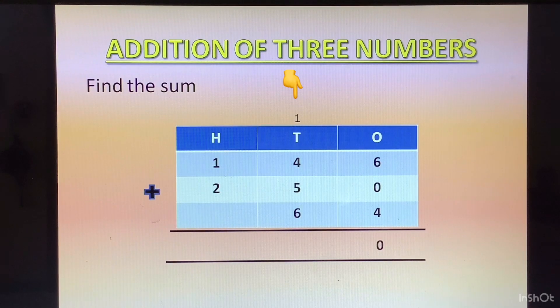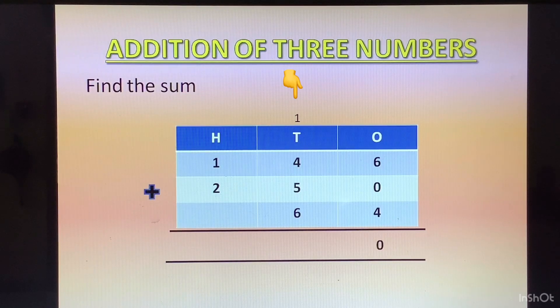Now in the 10's column we have the numbers as 4 plus 5 plus 6 and plus 1 of the carry. We are going to group and add in any order so that the calculation becomes easy. We can start with 1 plus 4 which is 5, then 5 plus 5 which is 10, and 10 plus 6, 16. 1 will go at the top of 100's column and 6 at the bottom of 10's column.